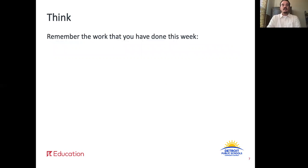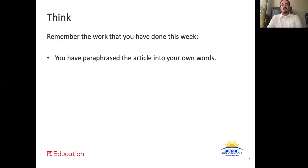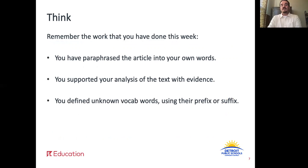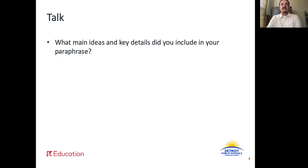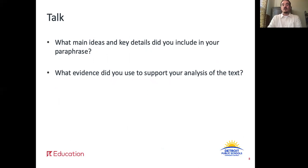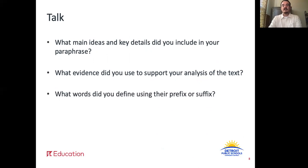Okay, time to think. Remember all the work that you have done this week. You have paraphrased the article into your own words, supported your analysis of the text with evidence, and defined unknown vocabulary words using their prefix or suffix. Now you will have a discussion with your family member, caregiver, or friend. What main ideas and key details did you include in your paraphrase? What evidence did you use to support your analysis of the text? And what words did you define using their prefix or suffix? Go ahead and pause the video here while you discuss.